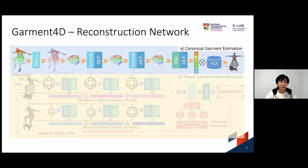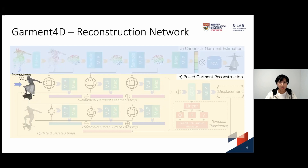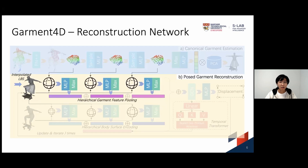First, using the body pose, we perform interpolated linear blend skinning to get a posed skirt candidate. Then, using the vertices of the skirt candidate as the anchors, we perform feature pooling for the GCN to predict displacements. In order for the vertices to be aware of the shape of the observed garment, feature pooling is used on different levels of downsampled skirt points. We call this process hierarchical garment feature pooling.